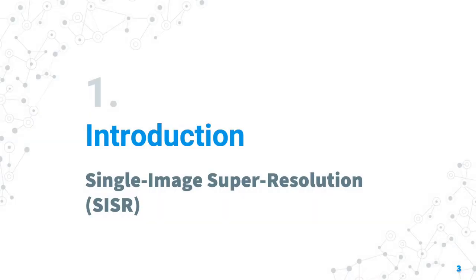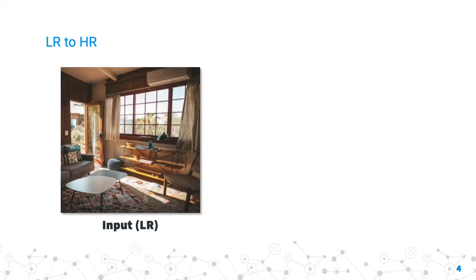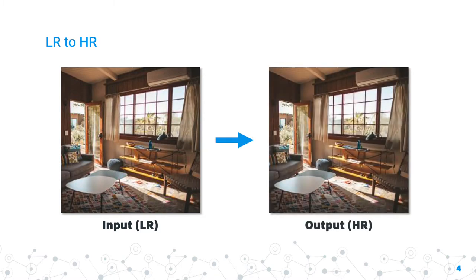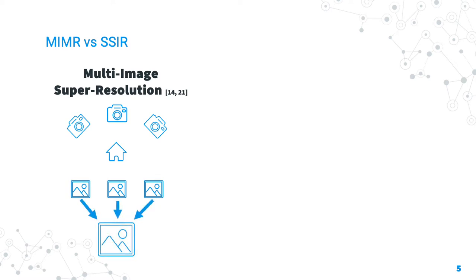Starting with the introduction, we're going to introduce the single image super resolution field. The field of single image super resolution, or more generally super resolution, has been the center of increased interest and research in the last two decades. Its aim is to recover or generate lost details by taking in a low resolution image and outputting a high resolution one. There are two fields in super resolution differing in the number of source images used. The first, multi-image super resolution, uses multiple images often taken from slightly different angles and times — for example, multiple cameras pointing at the same subject — to produce a high resolution image.